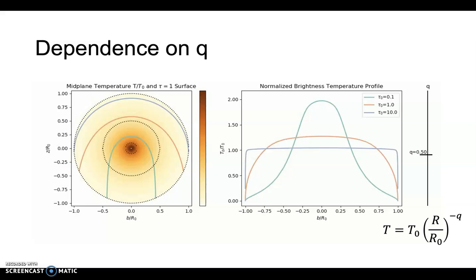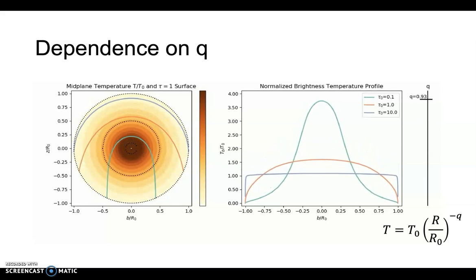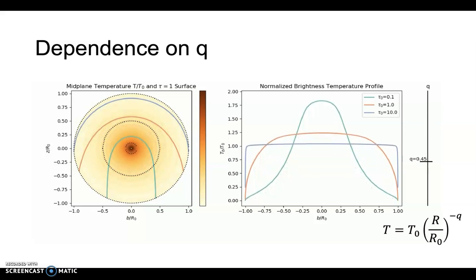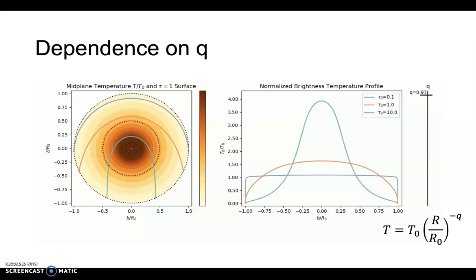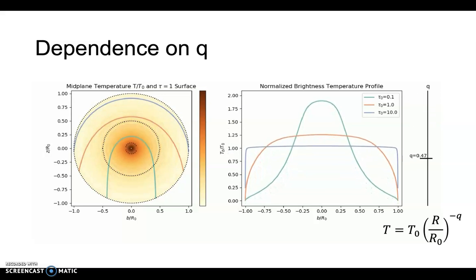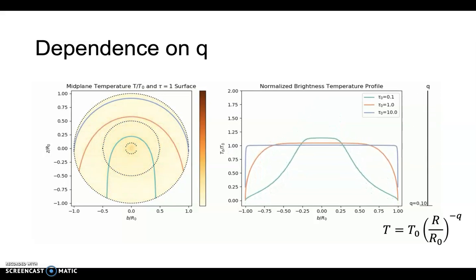In the case when the temperature q is high, the inner region is very warm, and the contrast between the smallest tau and the largest tau is high. In the extreme case when little q is small, essentially isothermal, the peak brightness temperature is the same for these three profiles.